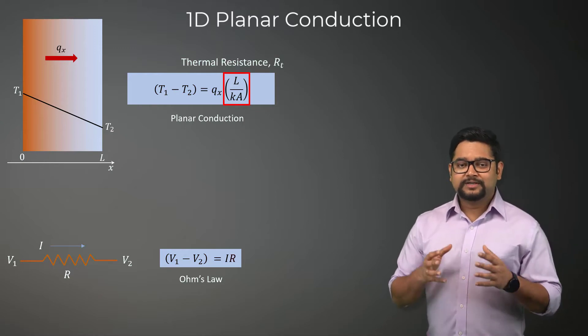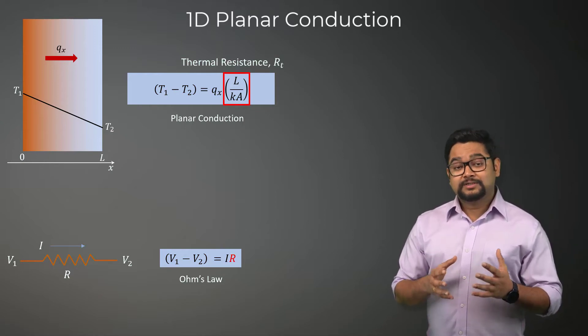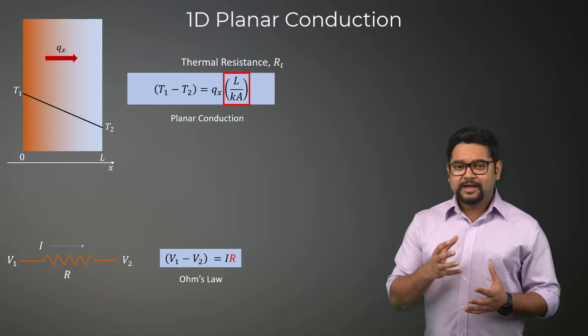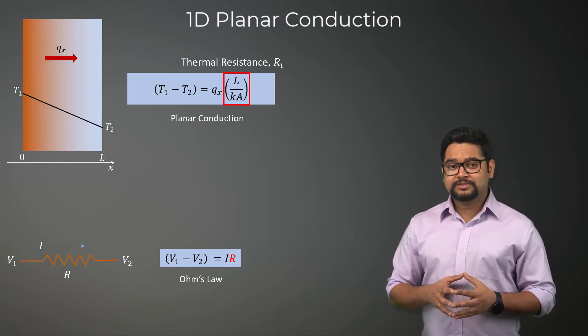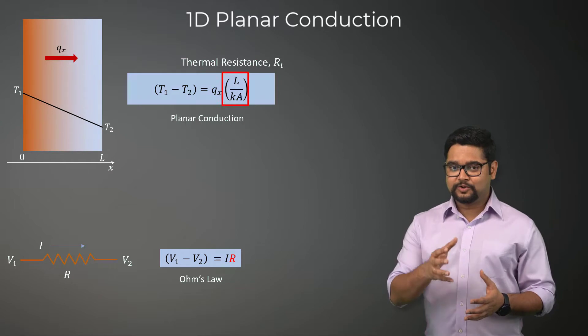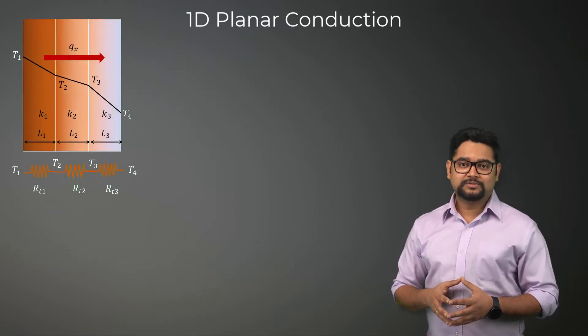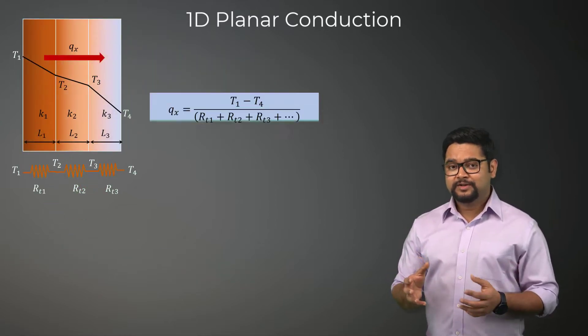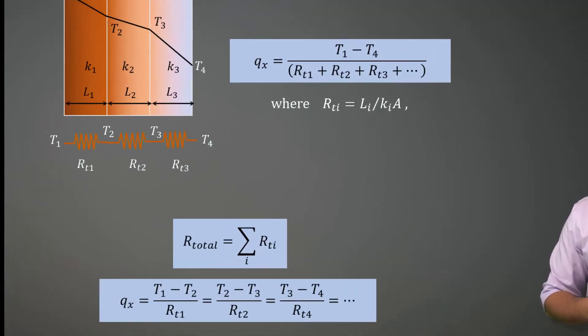This analogy is a very powerful tool as it allows us to easily formulate and compute the total thermal resistance and heat transfer rates across complex composite walls, which can be converted to their equivalent thermal resistance networks.